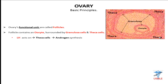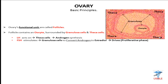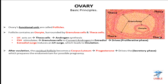LH acts on theca cells, which induces androgen synthesis. And FSH stimulates granulosa cells, which then convert the androgen made by the theca cells into estradiol. This estradiol drives the proliferative phase of the endometrial cycle. An estradiol surge induces an LH surge, which leads to ovulation. After ovulation, the residual follicle becomes corpus luteum, which secretes progesterone, driving the secretory phase of the endometrial cycle and preparing the endometrium for possible pregnancy.